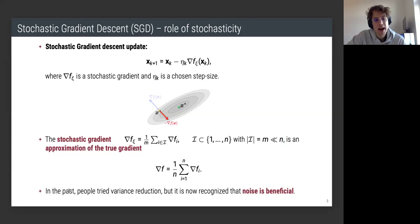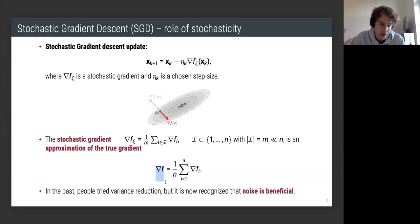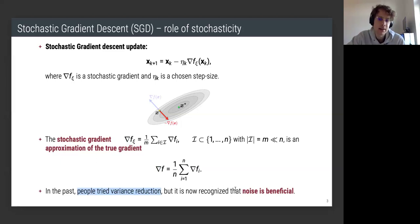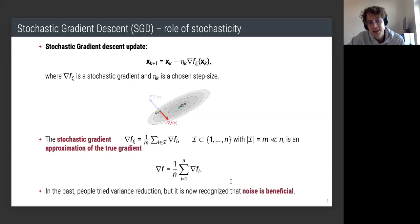What's interesting is that in the past, people tried variance reduction to get the stochastic gradient estimate closer to the true gradient. People wanted to do true gradient descent but could only computationally afford the stochastic gradient. Variance reduction was pursued to close that gap. But now it is increasingly recognized that the noise is beneficial — or put differently, there are arguments against taking the true gradient even if you could afford it.